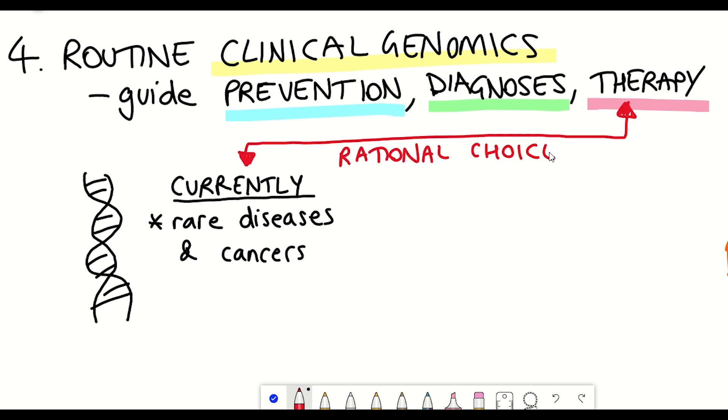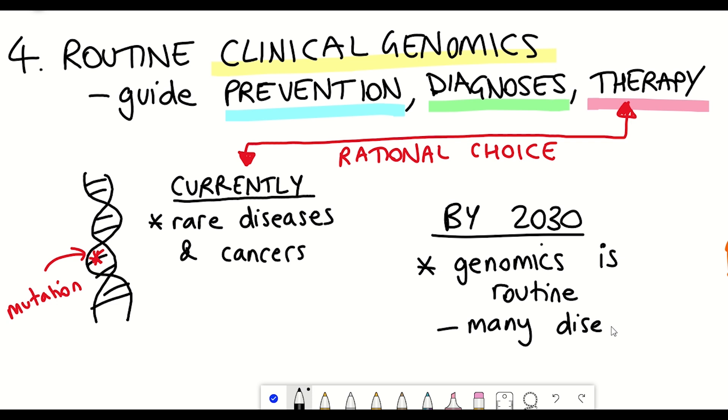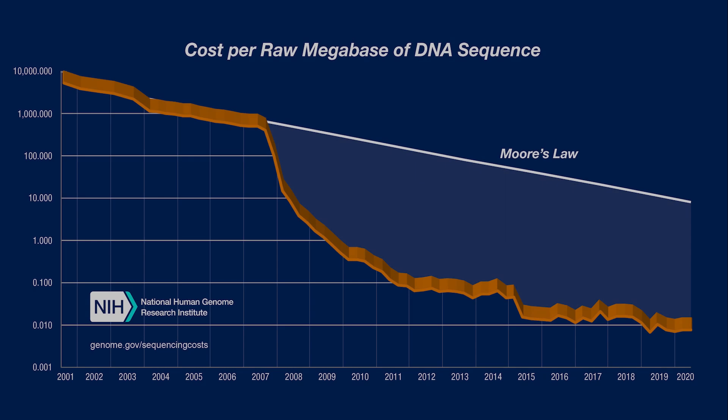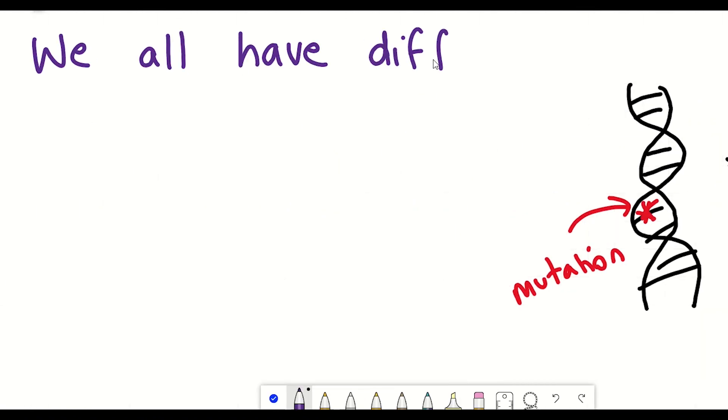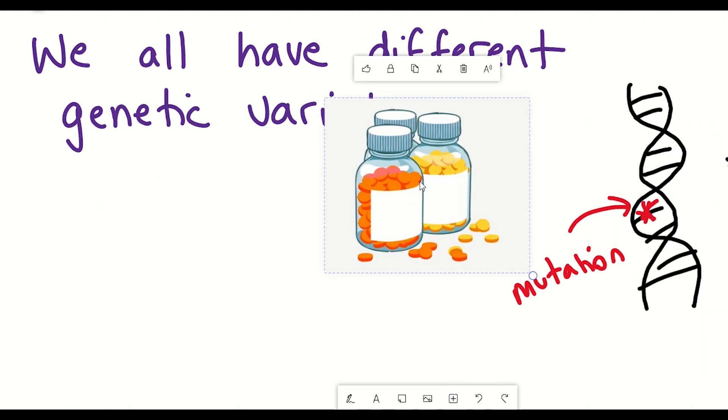However, by 2030, the authors of this commentary predict that genomics will be routine, with genetic causes and targeted therapies being discovered for many common diseases, and also microbiome measurements being routinely included. In part, this will become possible due to the ever declining costs in sequencing DNA. And the reason that this could be useful is that it's because all of us have different genetic variations. And this means that we could respond differently to different drugs.